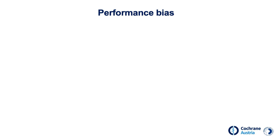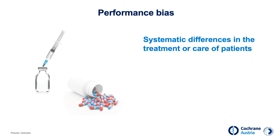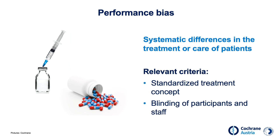Performance bias occurs when, apart from the intervention under investigation, there are systematic differences in the treatment and care of patients. For example, the type of care and attention changes with the intravenous administration of a medication. So if you compare two drugs administered differently, it remains unclear whether a different effect is due only to the drug or to the other care and attention given. To prevent performance bias, it helps to have a standardized treatment concept for all study groups and to blind all people involved in the study.